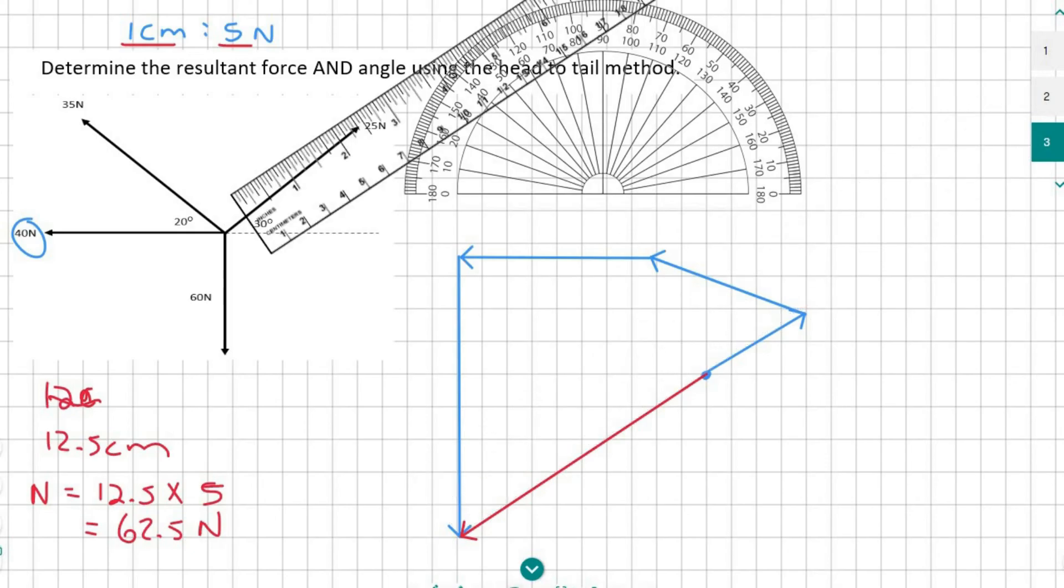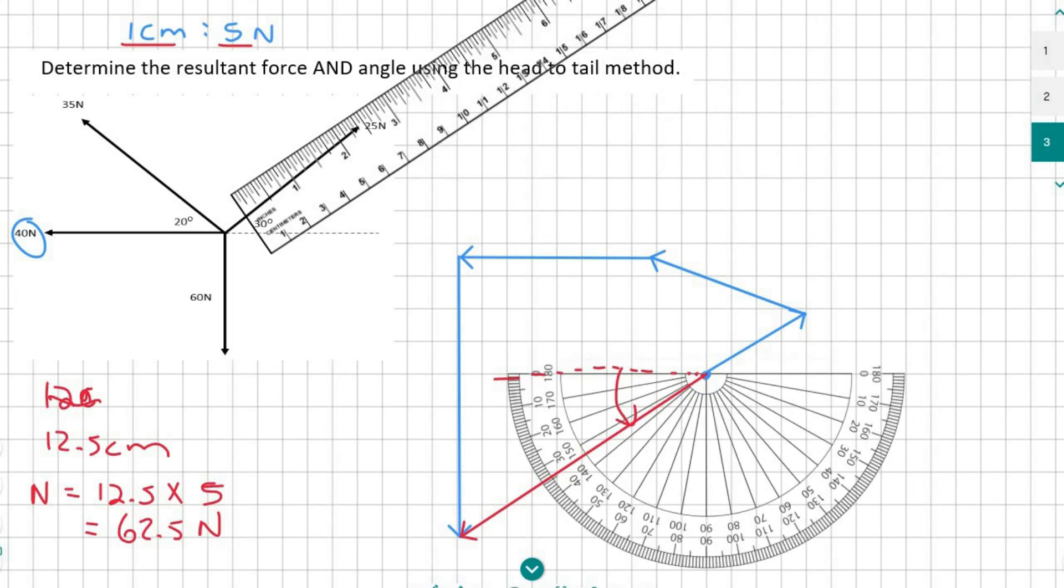So we've worked out the force and now we're going to work out the angle. So I'm going to put my protractor upside down and I am going to measure this angle over here. There I've placed the protractor and now I'm going to measure this angle there. And it's going to take me to about 34 degrees.